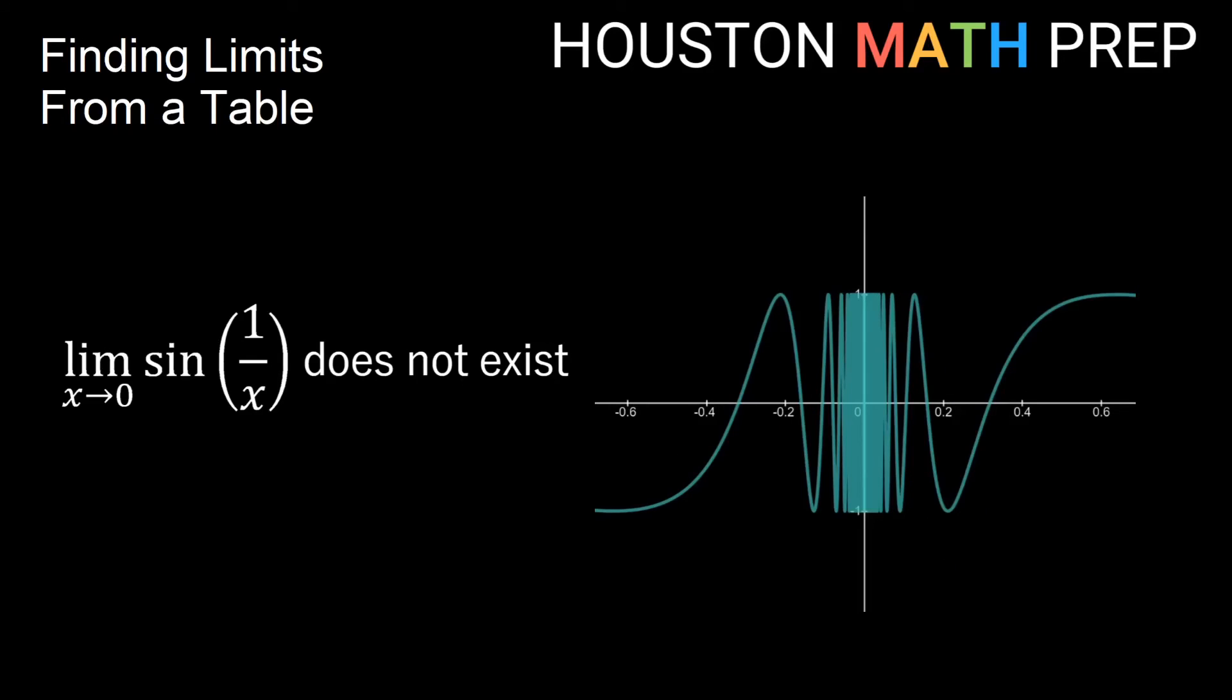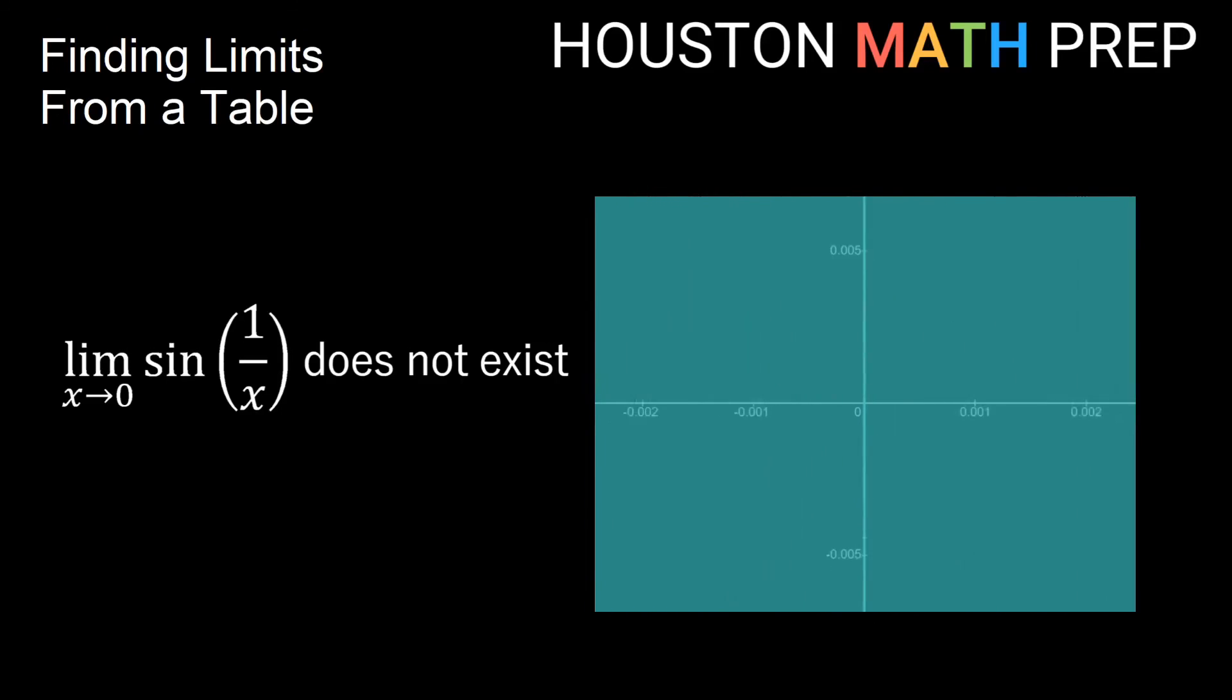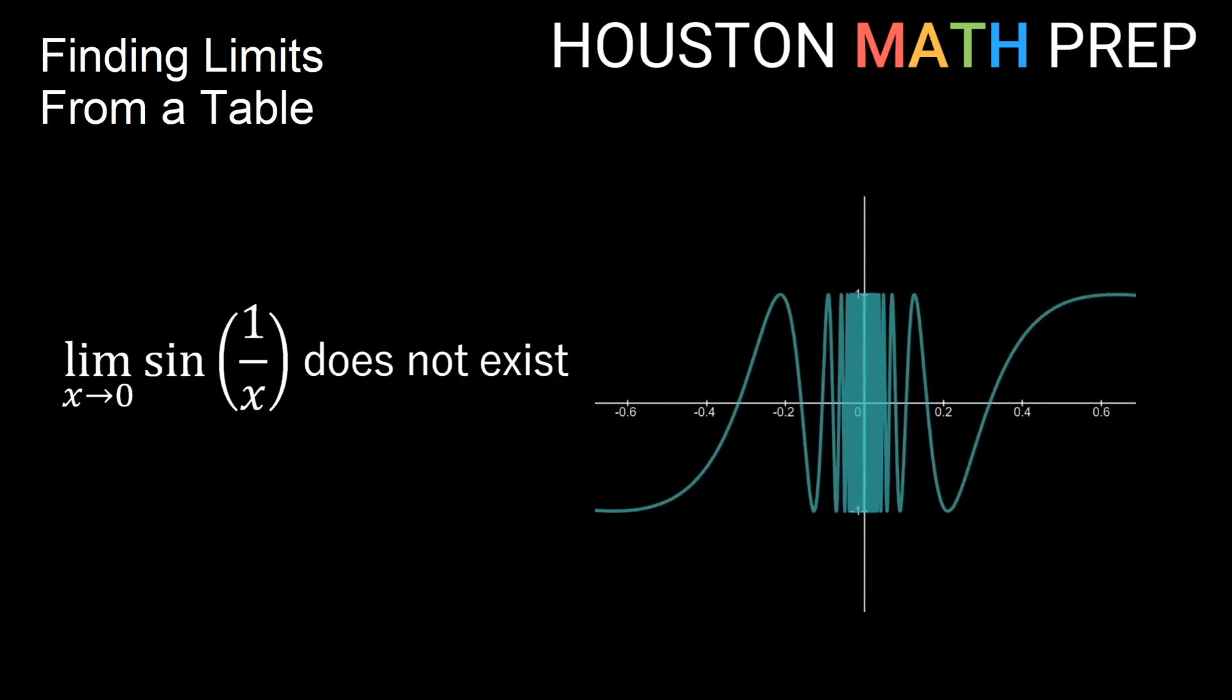And you might think, well, as x gets really close to 0, maybe it settles down, but it turns out if we zoom way in on this, you can see it just oscillates back and forth so much that it just fills up space entirely, you can't even see what y value we're approaching at all. So in this case from the graph, this is a little bit of a strange one, but we can definitely see that there is no y value for us to say that it approaches because it oscillates in such a crazy fashion, we couldn't even narrow a y value down that it approaches.